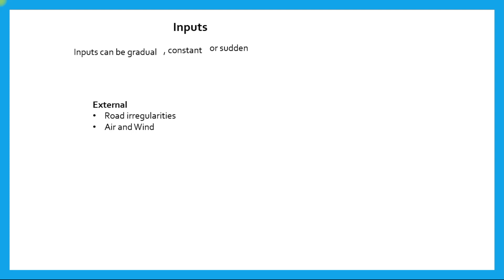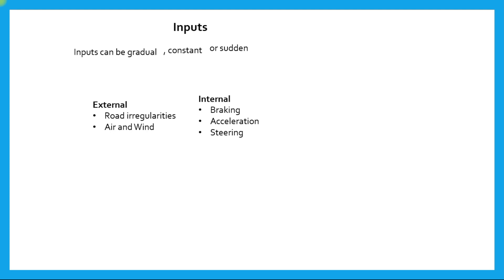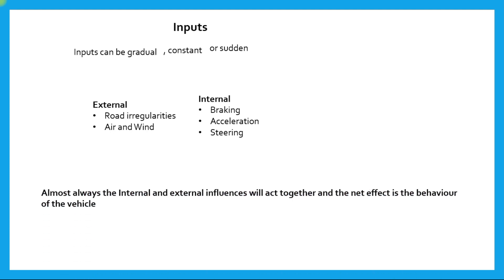External inputs include road irregularities and the air or wind acting on the outside shell of the vehicle. Internal inputs include braking action initiated by the driver, acceleration initiated by the driver, and steering inputs. Almost always, the internal and external influences on the vehicle act together, and the net effect — the output — is the response of the vehicle to this combination of internal and external influences.